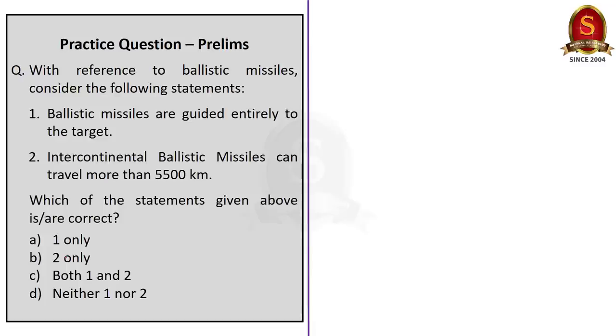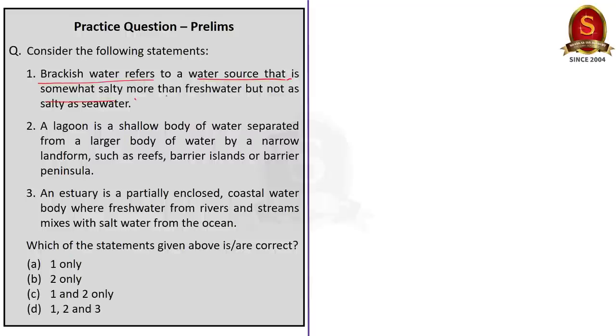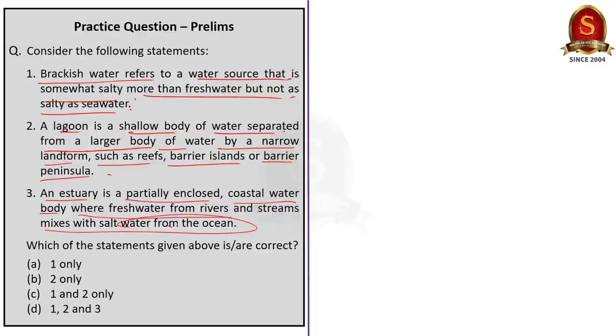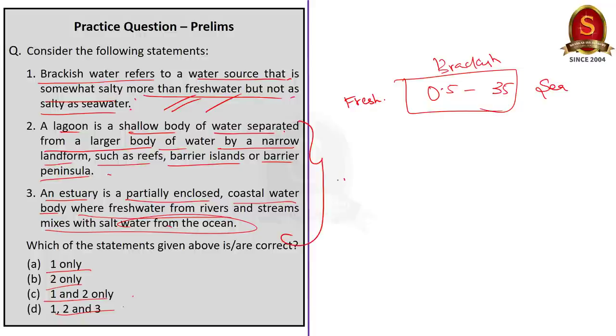Look at the second question. Consider the following statements. Brackish water refers to a water source that is somewhat salty more than freshwater but not as salty as seawater. Second statement is a lagoon is a shallow body of water separated from a larger body of water by a narrow landform such as reefs, barrier, highland or barrier peninsula. The third statement is an estuary is a partially enclosed coastal water body where fresh waters from rivers and streams mixes with salt water from the ocean. Which of the following statements are correct? One only, two only, one and two only, one, two and three. See the first question? It is correct because we have seen that brackish water has salt content between 0.5 ppt to 35 ppt. Over 35 ppt it is seawater and below 0.5 ppt it is freshwater. So statement one is correct. See statement two and three these are definitions of lagoon and estuary. You can remember that. So here our answer is D, one, two and three.